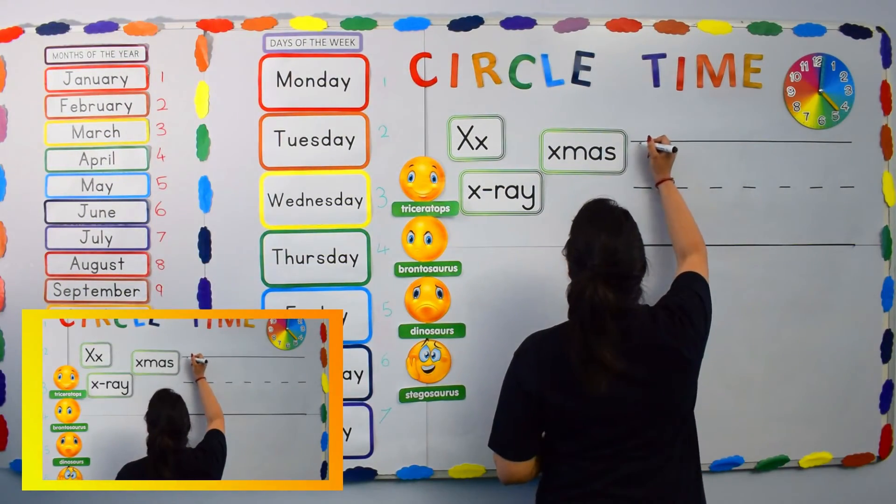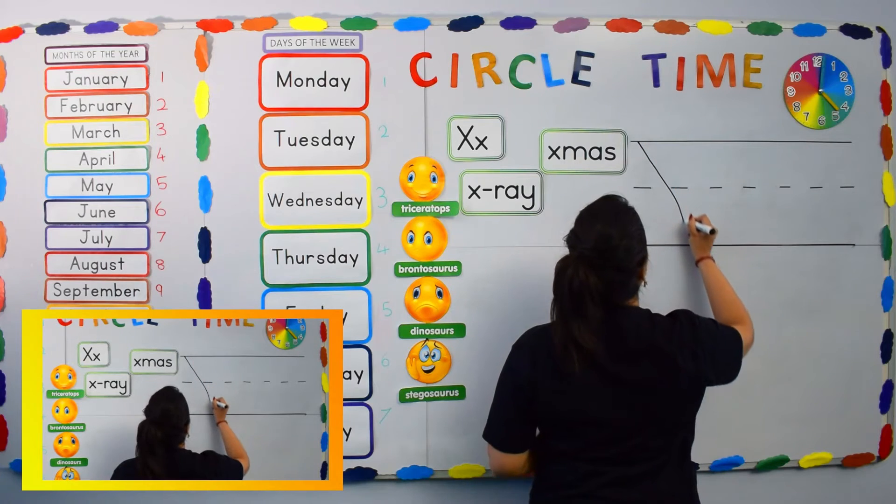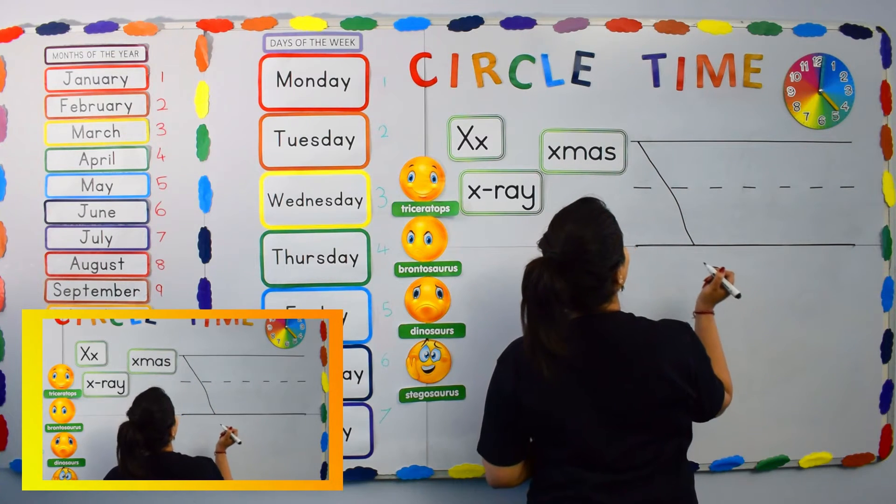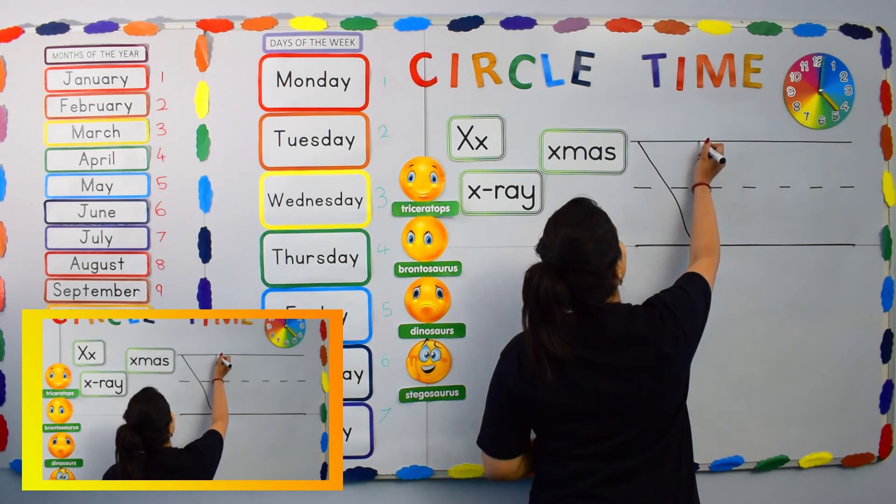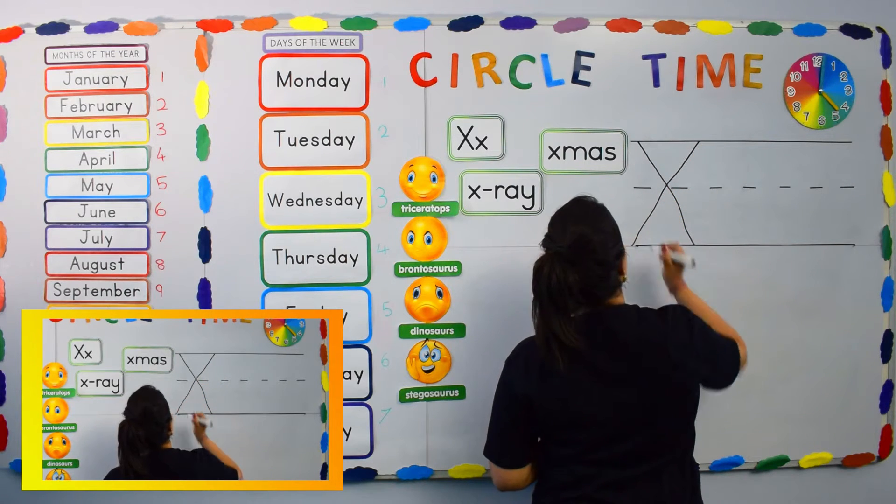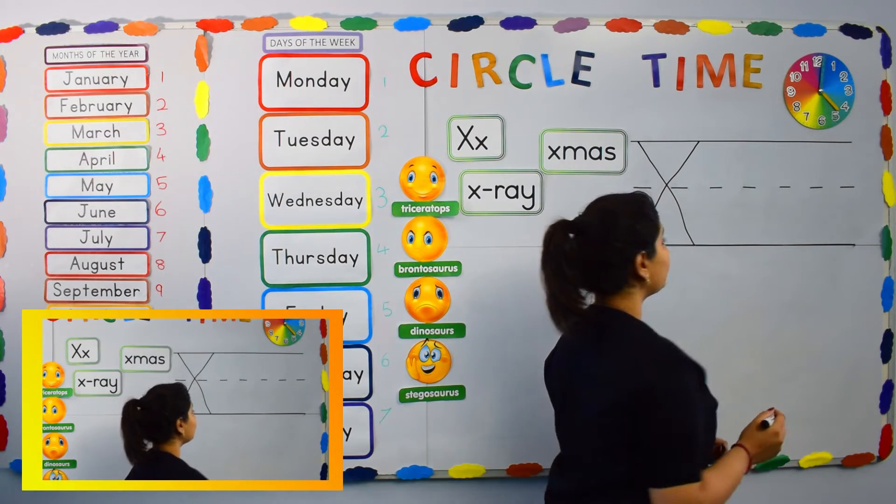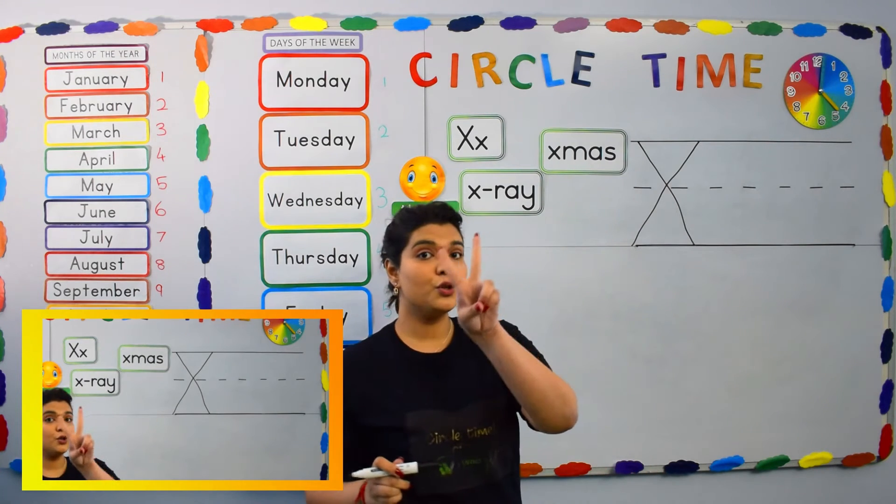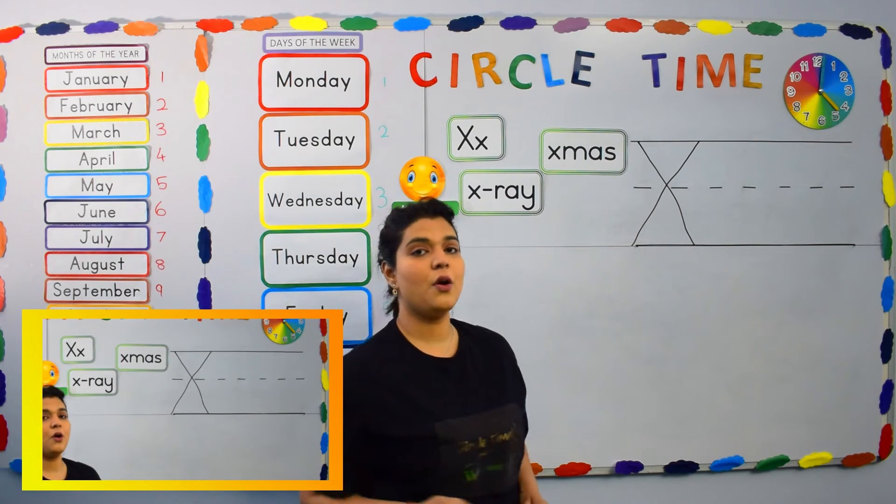So, big letter X starts at the top of the line and comes all the way down. And then, again, starts at the top of the line and comes all the way down. Those were two strokes. Two strokes.